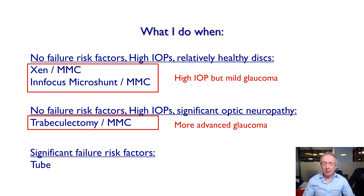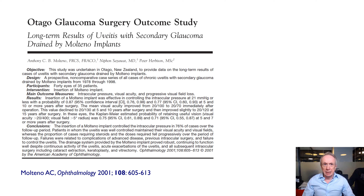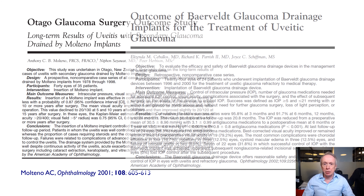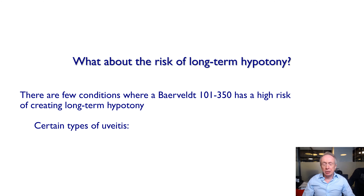If they have significant failure risk factors, then it's a tube — and this can be ethnicity, single-chamber eye, neovascular disease, previous conjunctival surgery, and certain types of uveitis such as JIA. Although there are no randomized trials, there is a long history of successful tube surgery in uveitis, dating back to Molteno and more recently the Baerveldt.